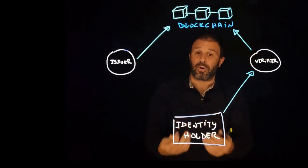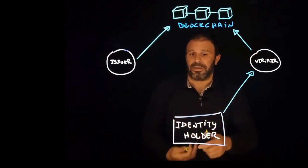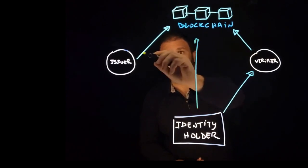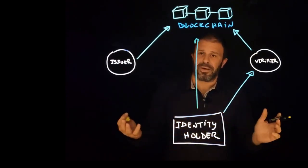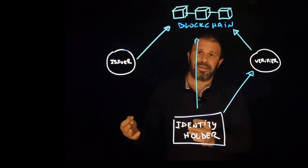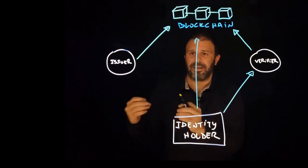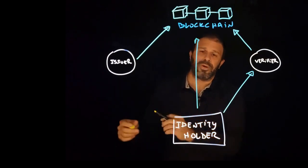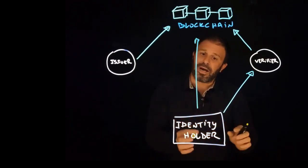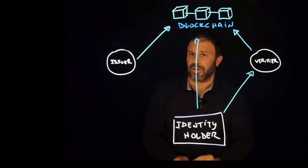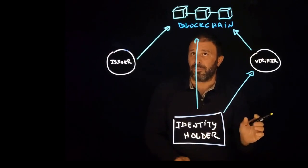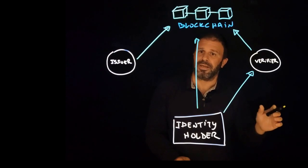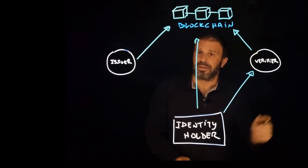When we rotate these keys, we need to tell the world that our identity, that can be the identity holder or the issuer, we need to tell everybody that now the identity that is behind this DID identifier is no longer in control or is no longer signing with that private key, and now we have this new set of keys. There is another case where we can have multiple keys, and we also want to tell the world that now this identity is in control of another set of keys.